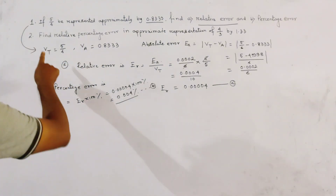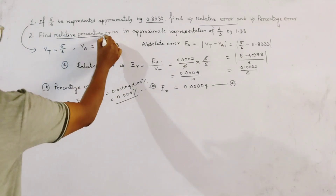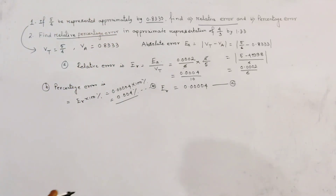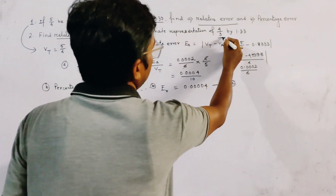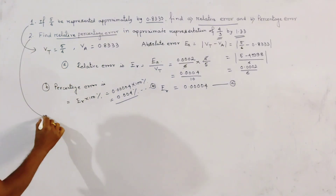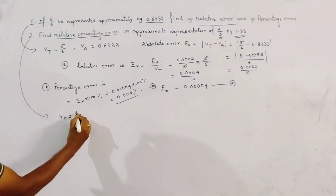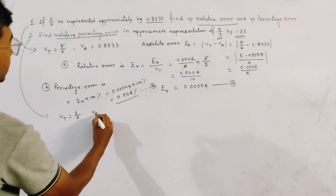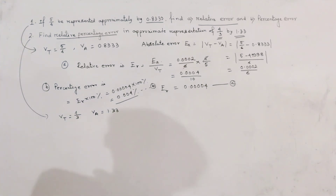For the second problem: find the relative percentage error in the approximate representation of 4/3 by 1.33. Note that relative percentage error simply means percentage error. For the second problem, the true value Vt is equal to 4/3, and the approximate value Va is equal to 1.33.